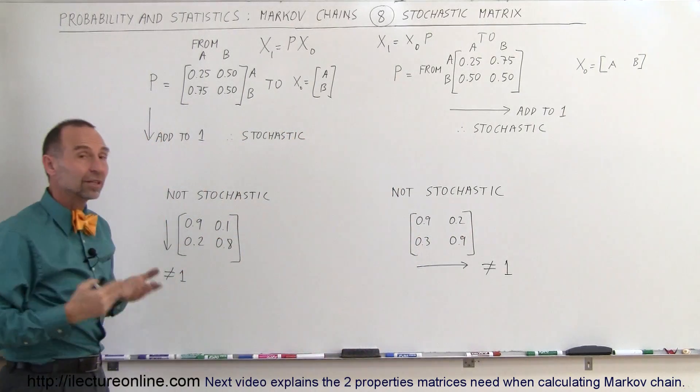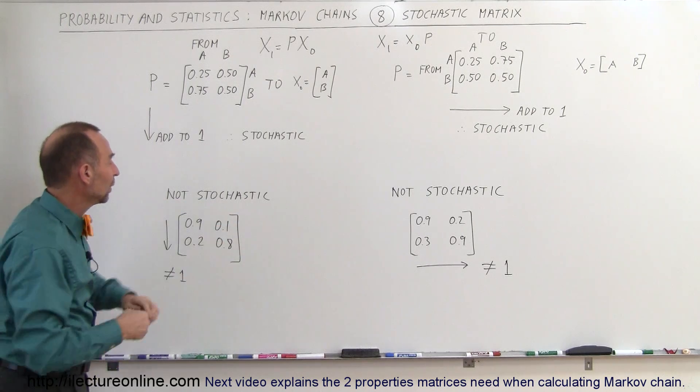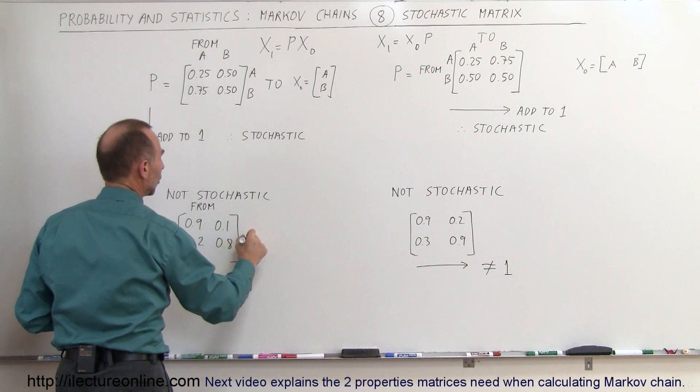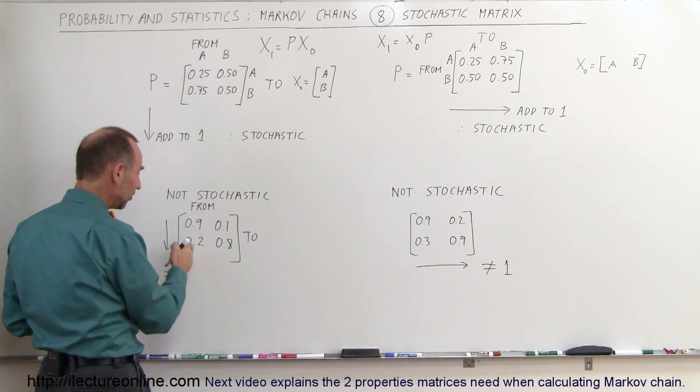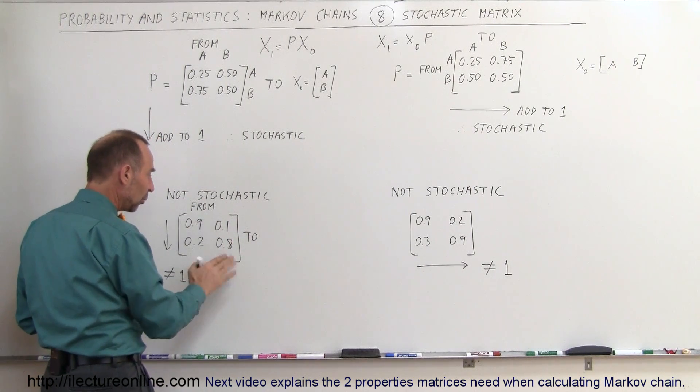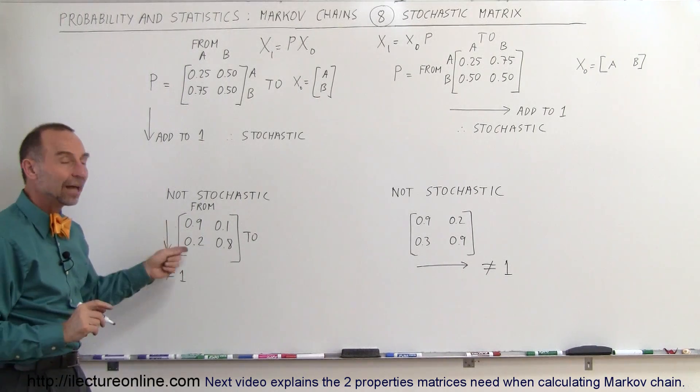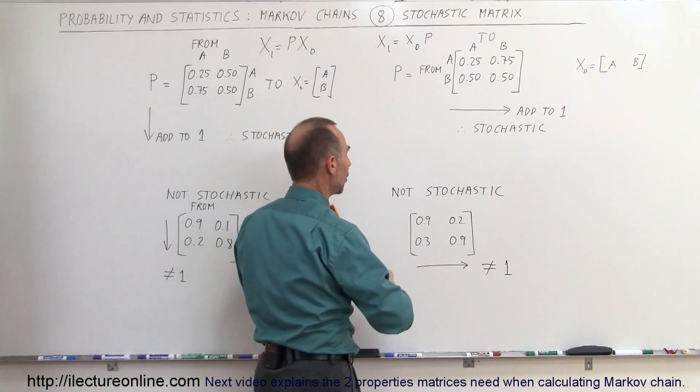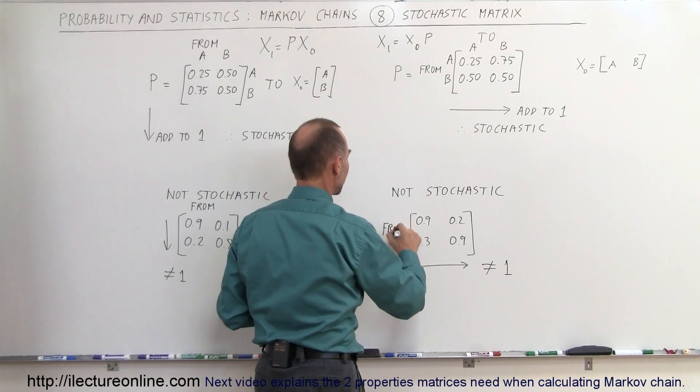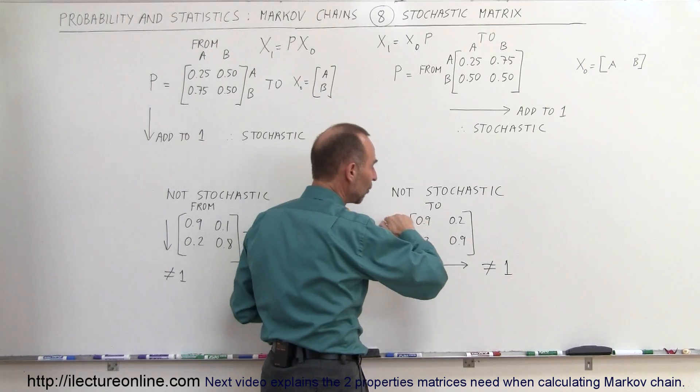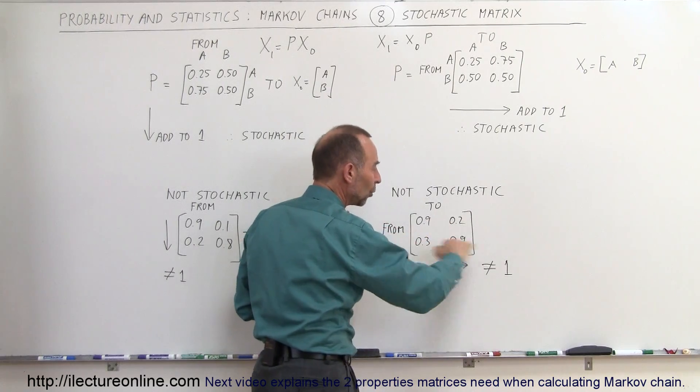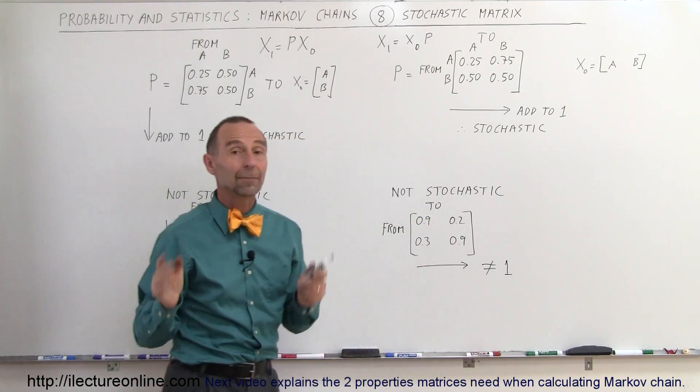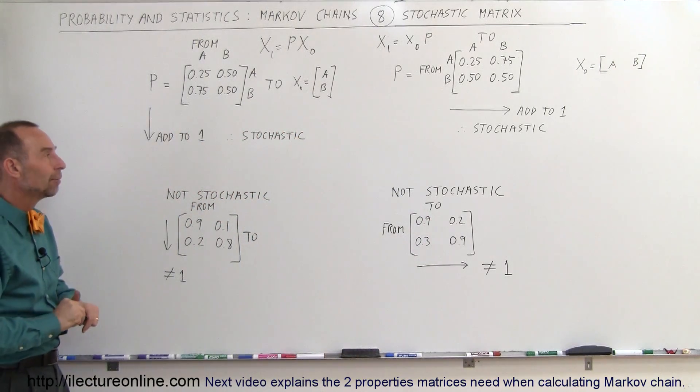Here are some examples where they're not stochastic. So if we go from to and again we want to make sure that we understand what method we're using here. So from to we add them up like this, this is not equal to 1, this is not equal to 1, this is not a stochastic matrix, this cannot be used in Markov chains, method 1. And here when we go from on the left to at the top, you can see when we go from left to right here, those rows do not add up to 1, so therefore this is not a stochastic matrix and that matrix cannot be used in a Markov chain problem.